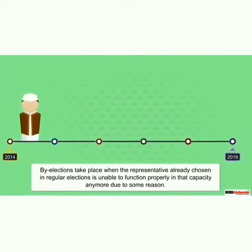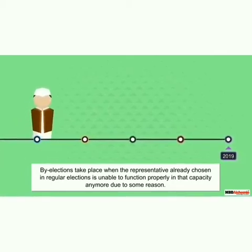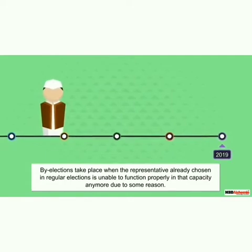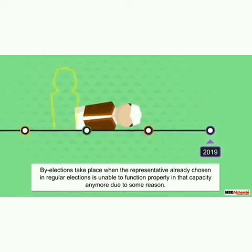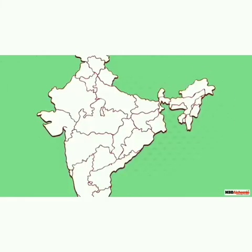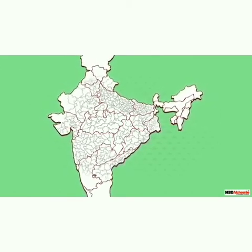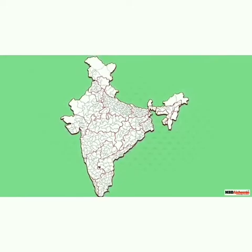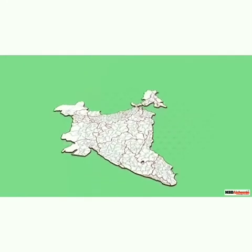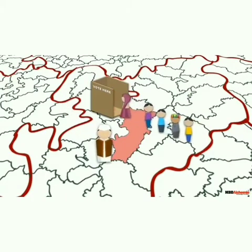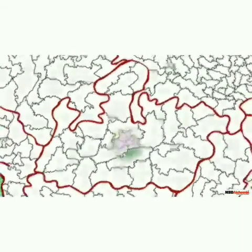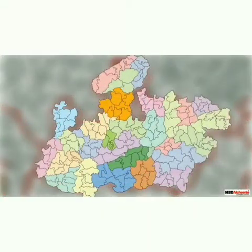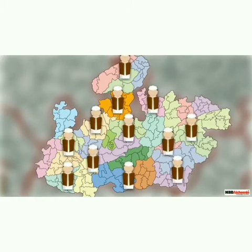Sometimes, by-elections take place when the representative already chosen in regular elections is unable to function properly in that capacity anymore due to some reason. For the general elections, our country has been divided into 543 territorial divisions known as constituencies. People residing in a constituency elect one person from among different candidates to represent them in the Lok Sabha, which is the lower house of the parliament. For assembly elections, the states are further divided into smaller constituencies and a representative is elected from each one of them to the respective state legislative assembly.